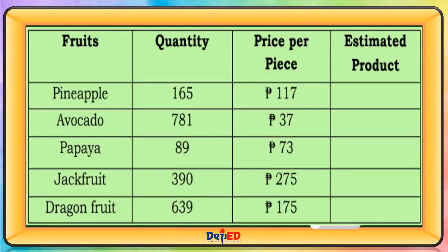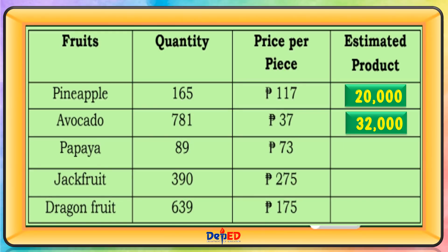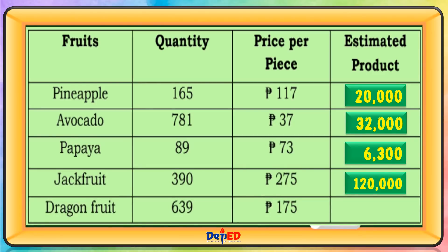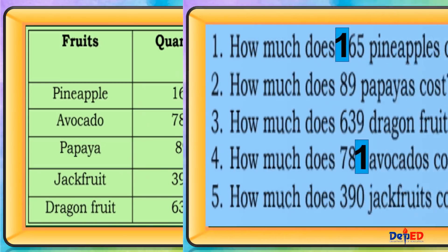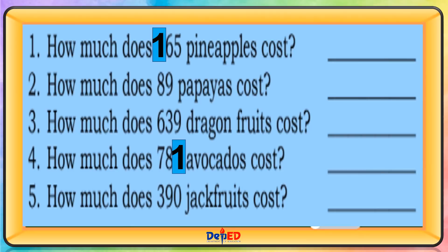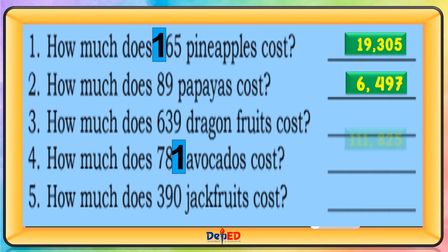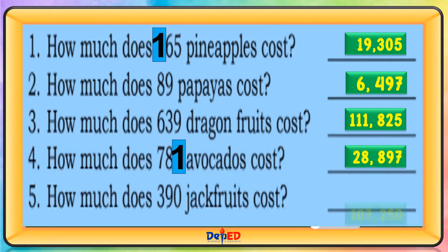The estimated product for pineapple is $20,000. Avocado is $32,000. Papaya is $6,300. How much does 165 pineapples cost? $19,305. How much does 89 papayas cost? $6,497. The answers are $111,825, $28,897, and $107,250.